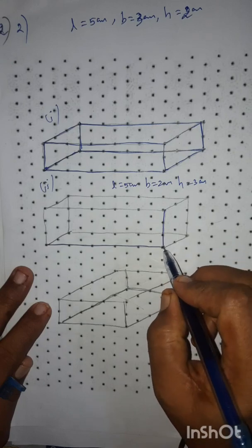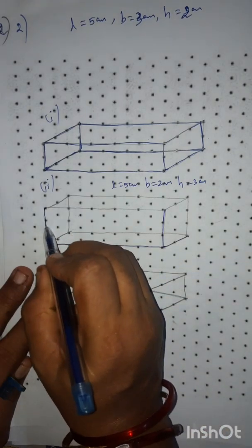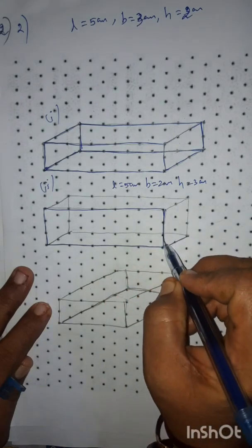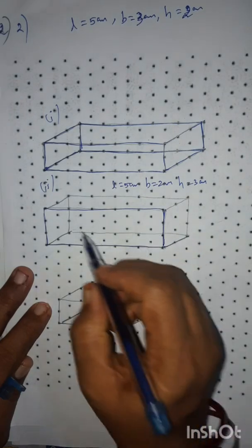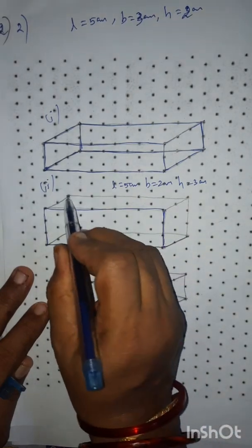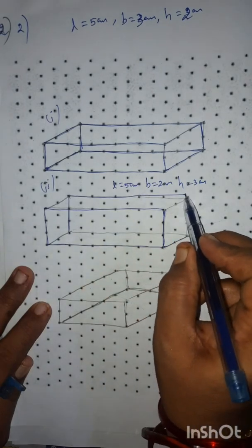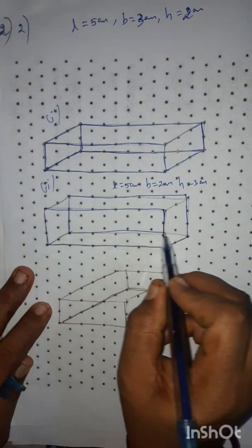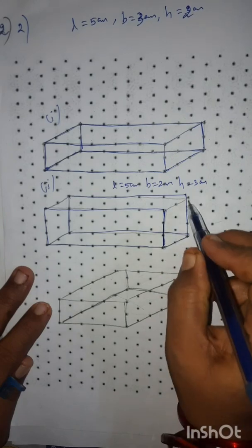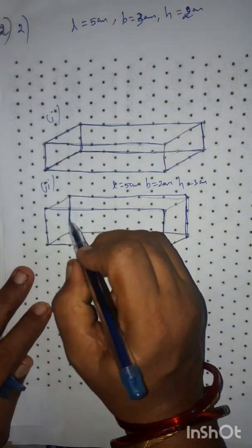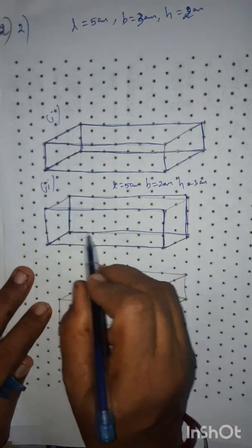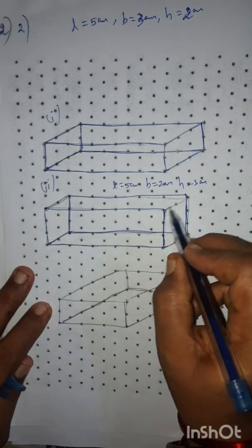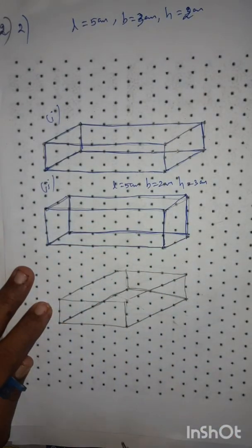Here you have to draw the cuboid. Complete this. Then join the heights in the base — already joined, complete. You will get a cuboid — second type.